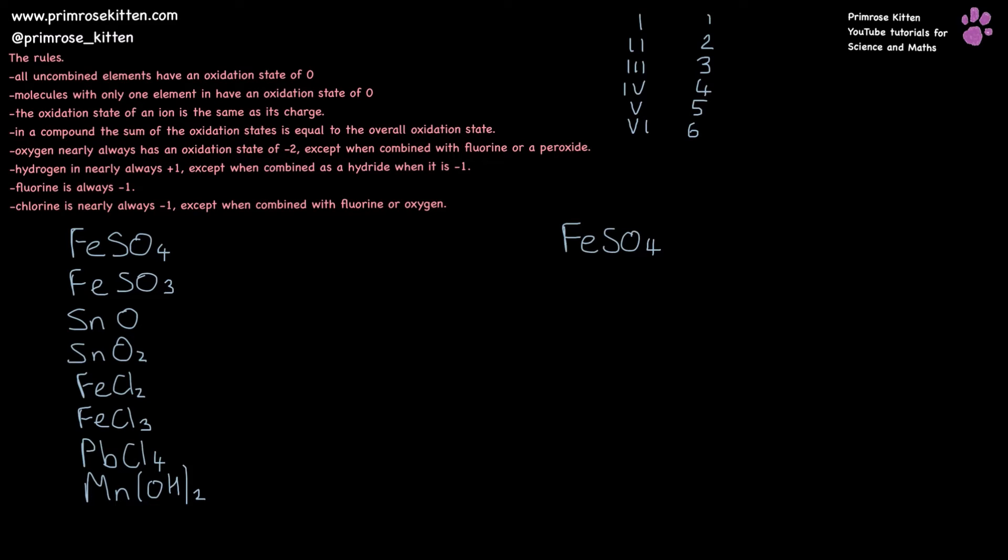The first thing we need to do is assign oxidation states to everything. So oxygen is minus two and there are four of them, giving an overall contribution of minus eight. A sulfate ion has a minus two charge. So sulfur must be contributing plus six, leaving iron to contribute a plus two charge, giving us iron(II) sulfate.